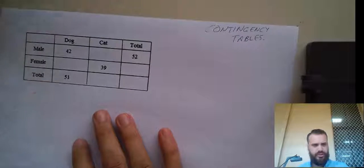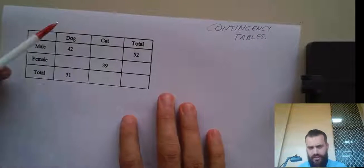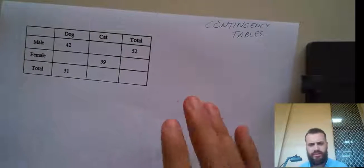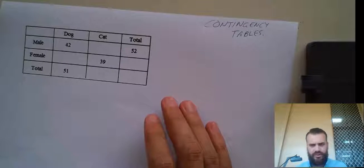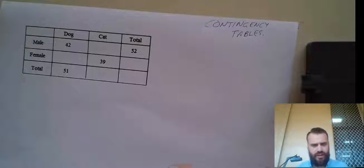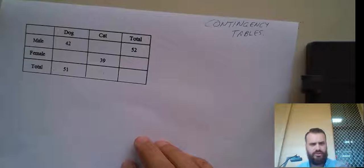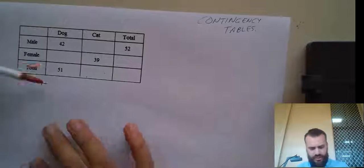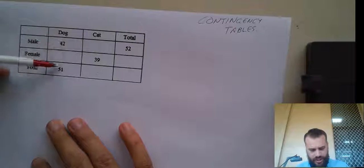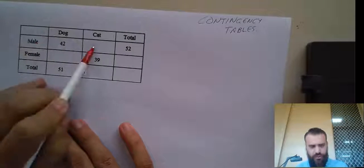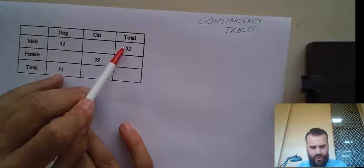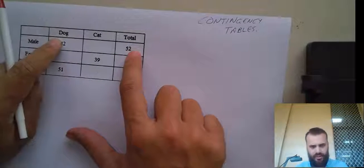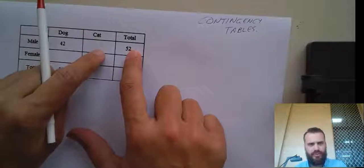This is a half-completed contingency table. One skill that you're going to need to have is being able to complete one of these tables. It's really simple — as long as you can see a row or a column with two things in it, you can figure out the third one.